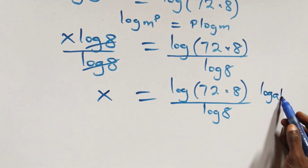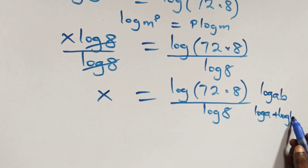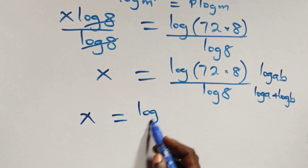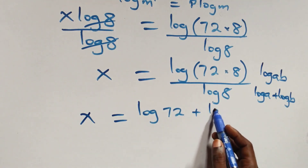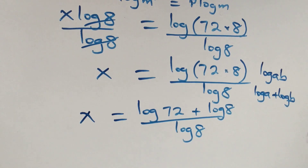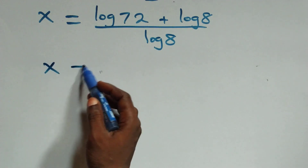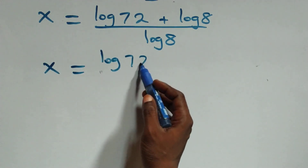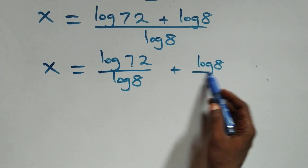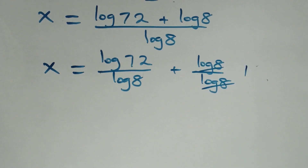From here, this follows the law of logarithms: log of a times b is the same thing as log a plus log b. So we have x equals log 72 plus log 8, all over log 8. We then separate this into two fractions: x equals log 72 over log 8, plus log 8 over log 8.